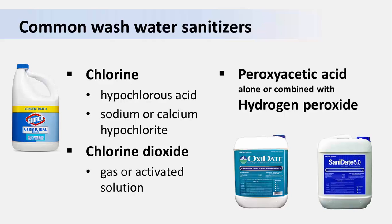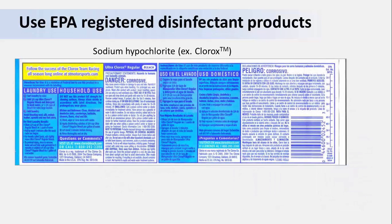When used properly and according to label directions, all of these sanitizers are very effective at lowering microbial populations in water. Regardless of the type of sanitizer you choose, we strongly recommend that you work with a chemical supply company to find the best one for your operation. Because chlorine or bleach sanitizers are most common, we will use these products to illustrate the general principles for the legal and effective use of sanitizers. We've all seen bleach products and other sanitizers available in stores for household use, such as for whitening laundry or disinfecting kitchens or bathroom surfaces. But most of these products are not acceptable for use in wash water because they are not labeled for food use.